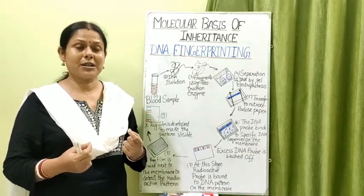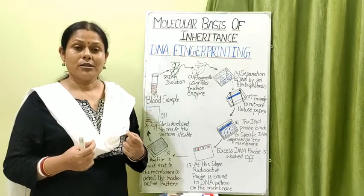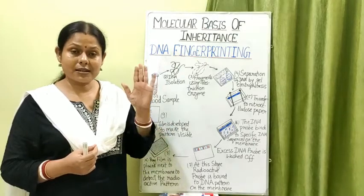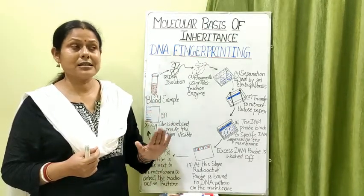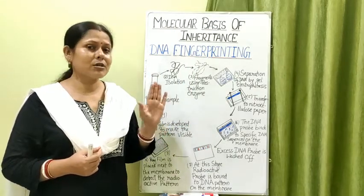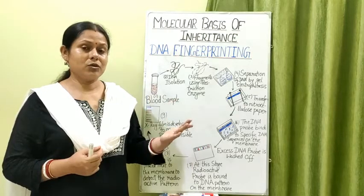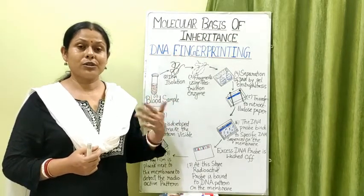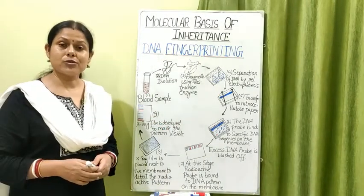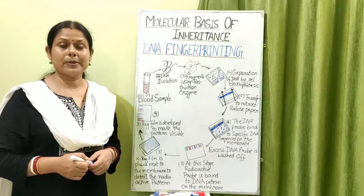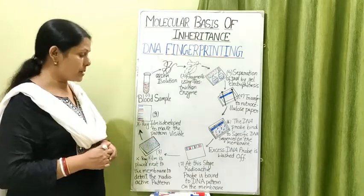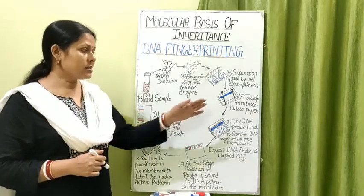Because the probes are radioactive, they can be detected on an X-ray plate using autoradiography. When the X-ray plate is developed and held against light, the various banding patterns become visible. This banding pattern is totally unique — my DNA banding pattern will not match yours. However, a child's banding pattern will match approximately 50% with the father's and 50% with the mother's.